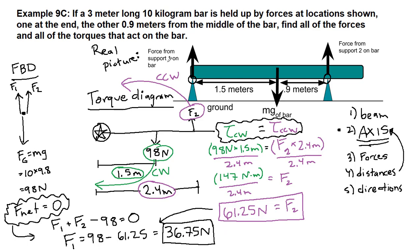And that's for the support number 1 on the left side. So these two are our two forces acting on the bar. The gravity force is also acting. We solved the 98 newtons.